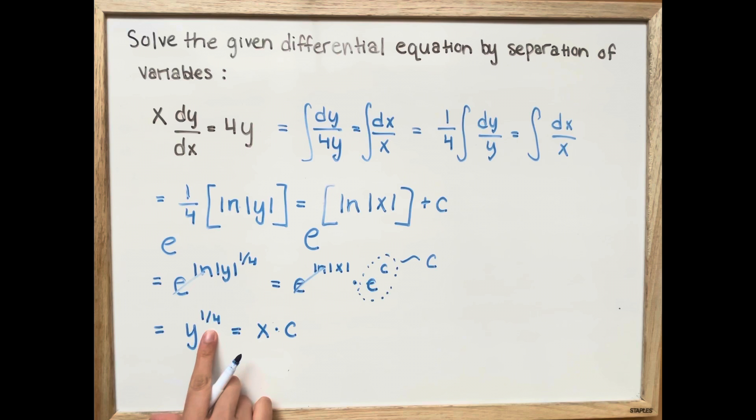So now to get rid of the power of 4, we're going to raise both sides to the 4th power and that's going to cancel out the 1/4 exponent.